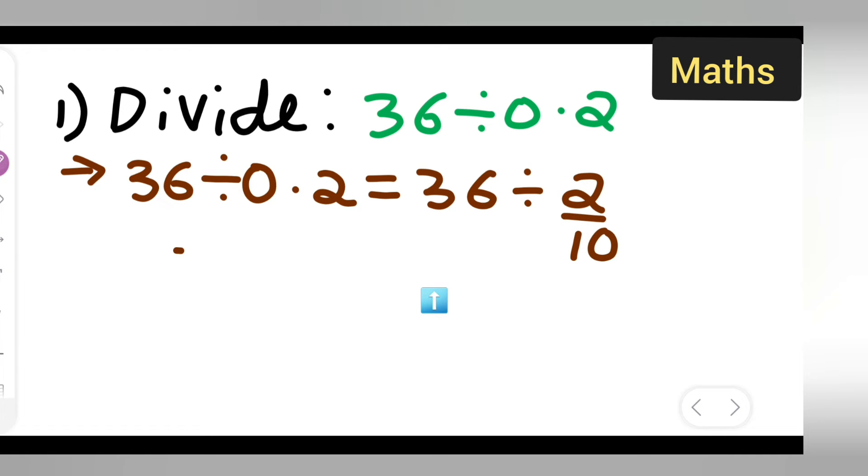So you can write down 36 multiplied by 10 upon 2. I have taken the reciprocal of this. Multiplication into the reciprocal, so it will be easy for you all to divide it.